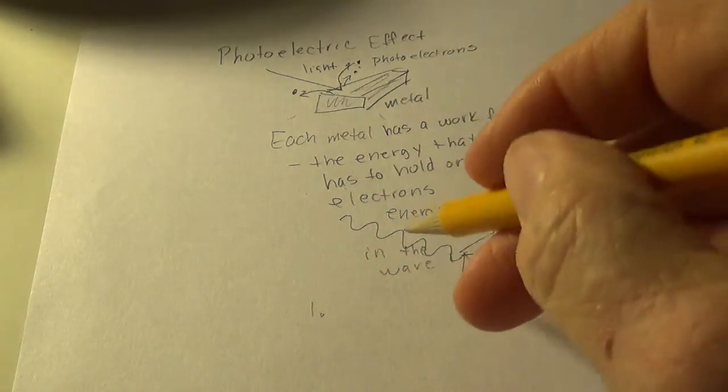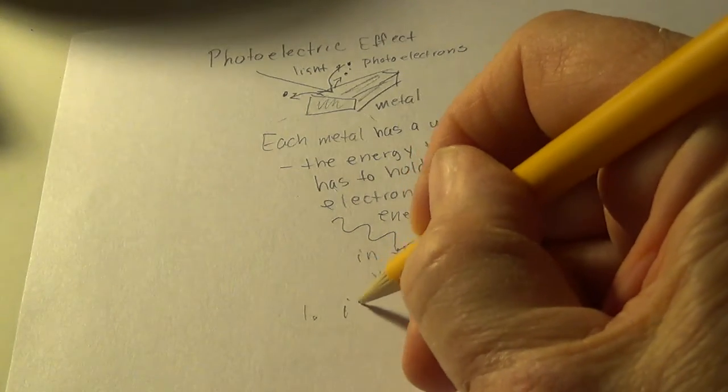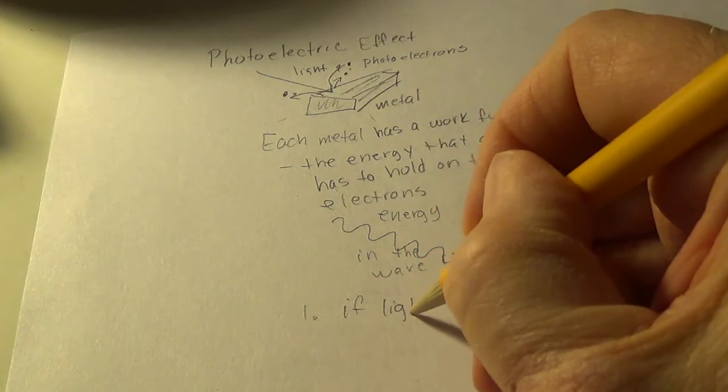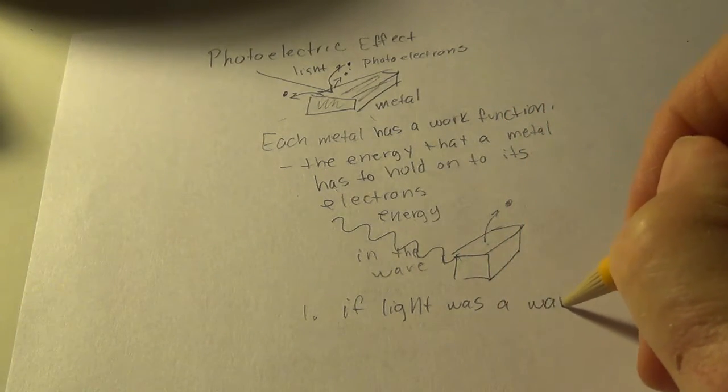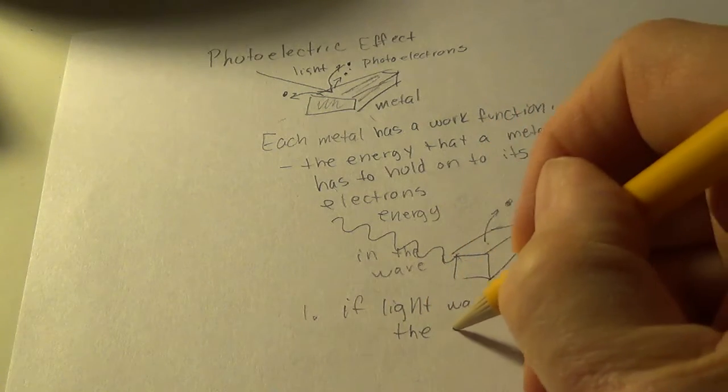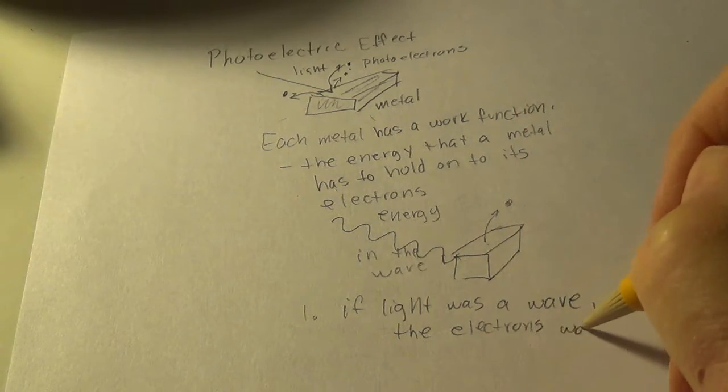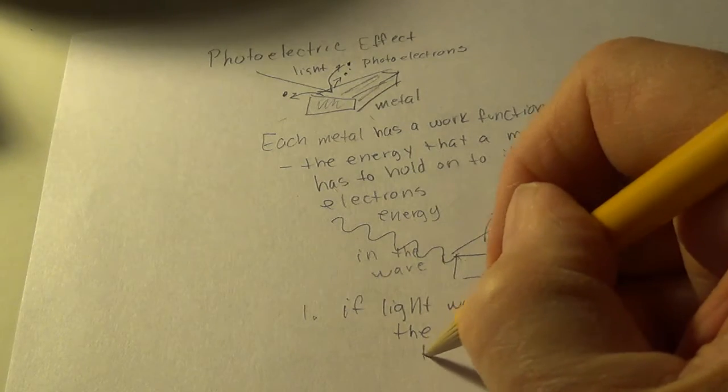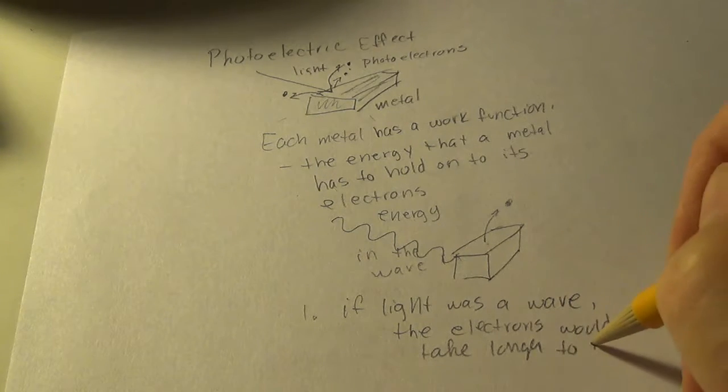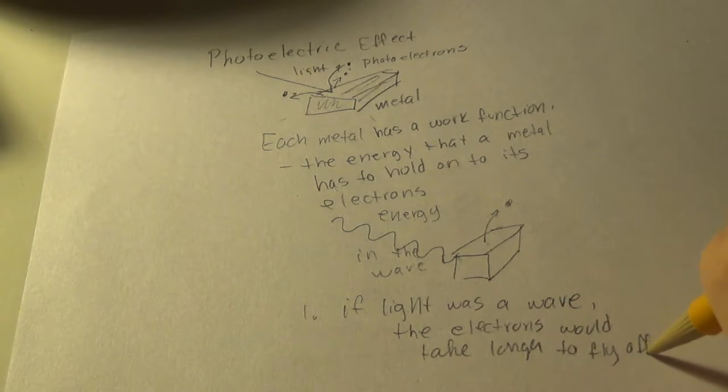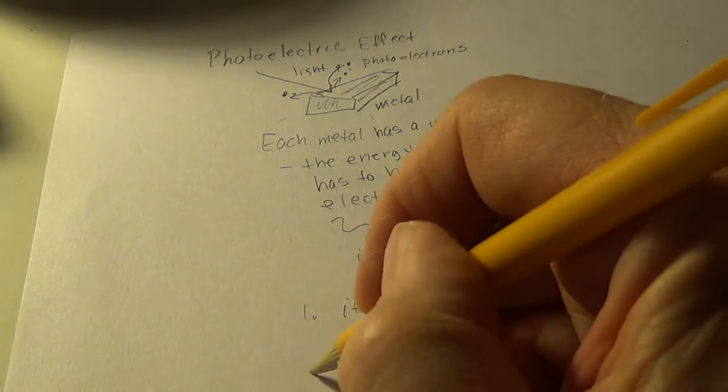And Einstein had equations to tell us exactly how long it would take. But if it was a wave, this energy takes a while to transfer into this metal. If it was a wave, it would take a certain amount of time. But it didn't work like that. It's like the electrons flew off almost immediately. So, that was very odd. So, number one, under number one, we could put, if light was a wave, the electrons would take longer to fly off.